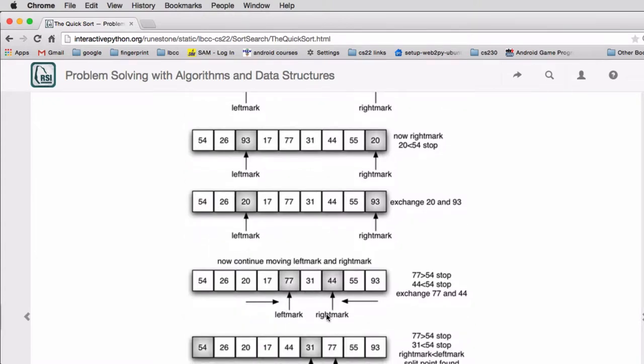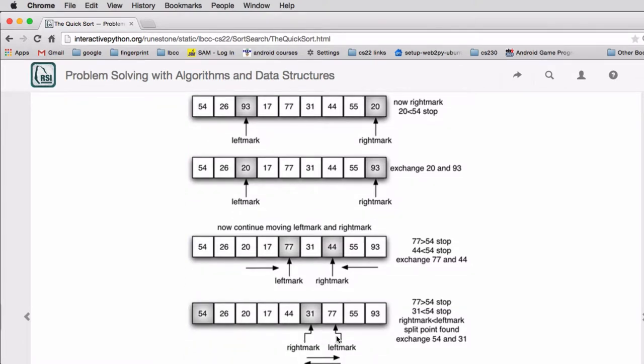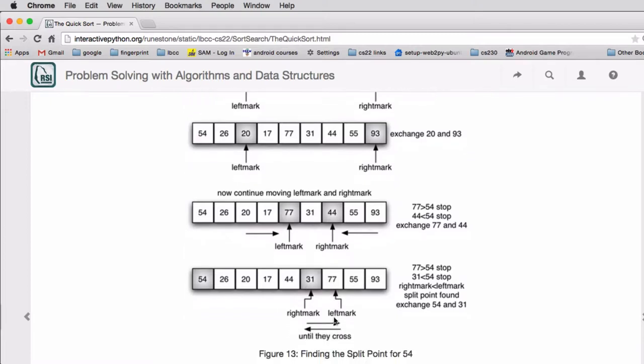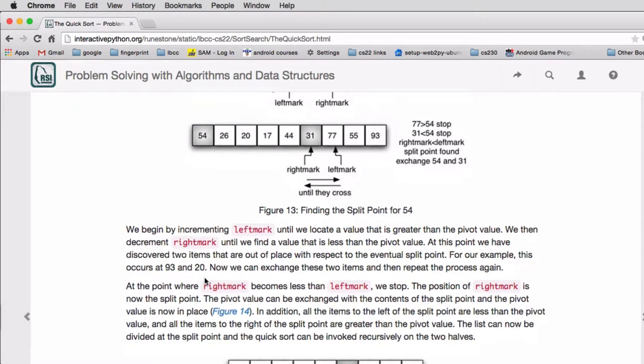And finally the left and right mark will pass each other by one. And once they've done that, the left mark will be pointing to the first item in the new left list, and the right mark is the first item in the new right list.